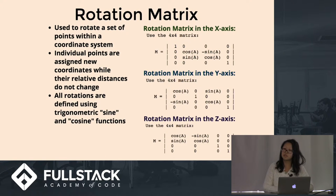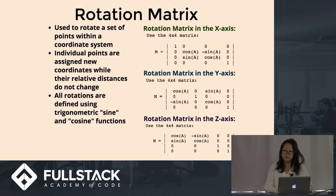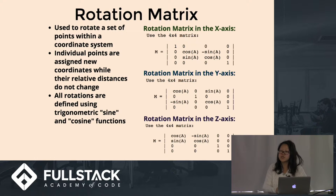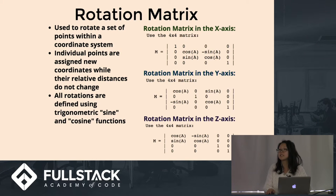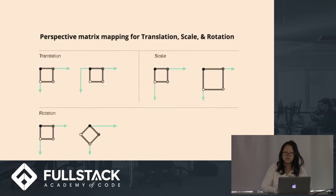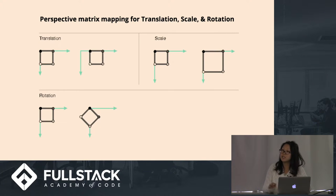Finally, we get to rotation matrices, which in and of themselves are quite complicated. These are used to rotate a set of points within a coordinate system. Individual points are assigned to new coordinates while their relative distances do not change. All rotations are defined using the sine and cosine functions, and there are three examples of rotation matrices for the x-axis, y-axis, and z-axis.